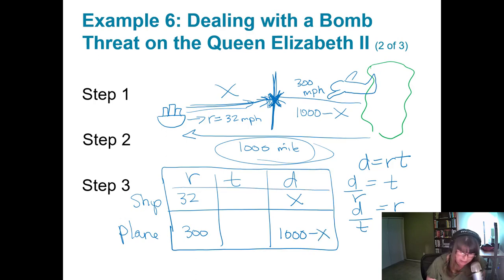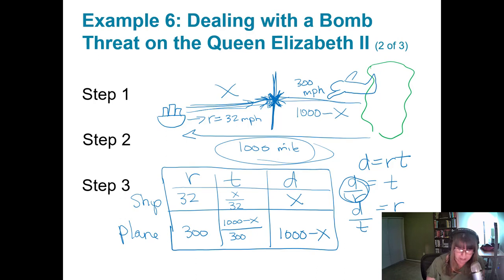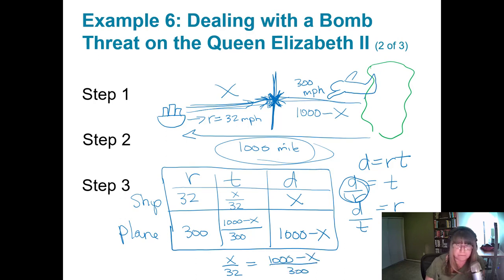We don't know how long it'll take before they meet, but we do know the time they're traveling is the same. Time equals distance divided by rate. For the ship: x divided by 32. For the plane: (1,000 minus x) divided by 300. Setting these equal: x over 32 equals (1,000 minus x) over 300. I'll transfer this to the next slide to solve.